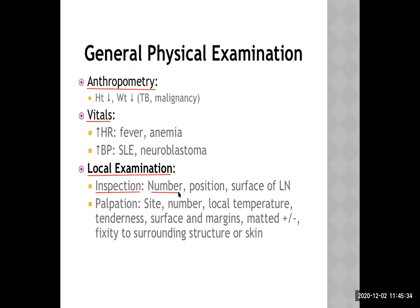On inspection of lymph nodes, note how many are visible, where they are located, and how the surface looks. On palpation, identify which exact group is involved — for the neck, groups include submandibular, submental, upper and lower deep cervical, posterior triangle lymph nodes, supraclavicular, occipital, and pre- and post-auricular lymph nodes. Note the number palpated, whether there is local temperature rise, tenderness, surface and margin characteristics, whether margins are discrete or matted, and whether nodes are fixed to surrounding structures or overlying skin.